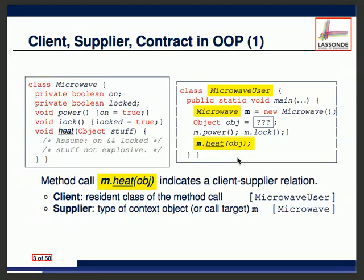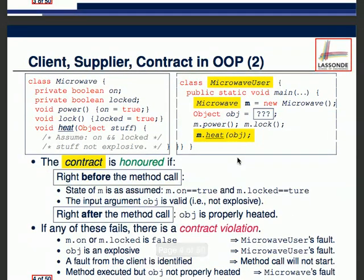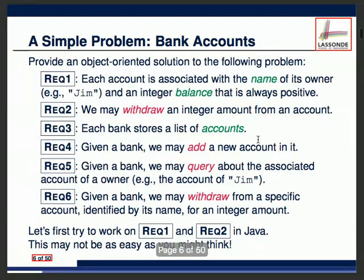For any programming language supporting object orientation, they all use dot notation — this is not specific to Eiffel or Java. So many of the ideas we teach, even though specified in Eiffel, are applicable to all other languages. We talked about client-supplier. The small problem we're focusing on today is requirements one and two; the other four happen to be more complicated to encode in Java, which I'll show next week. Today we'll finish requirements one and two.